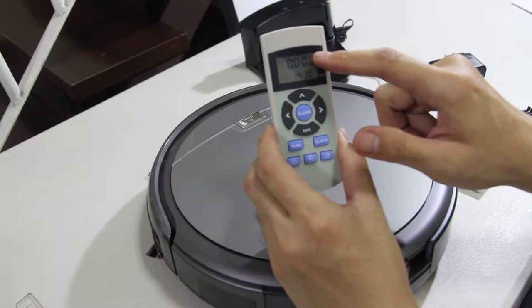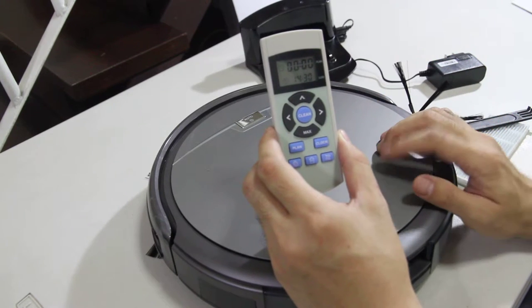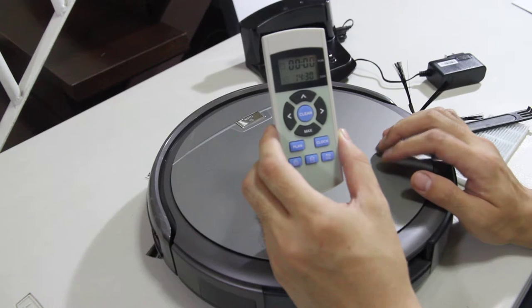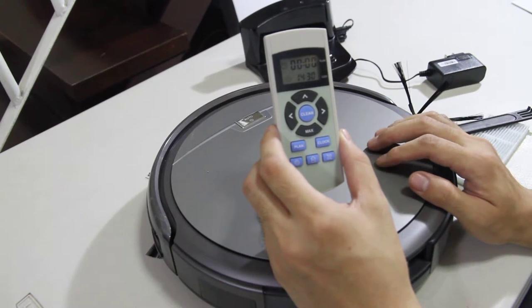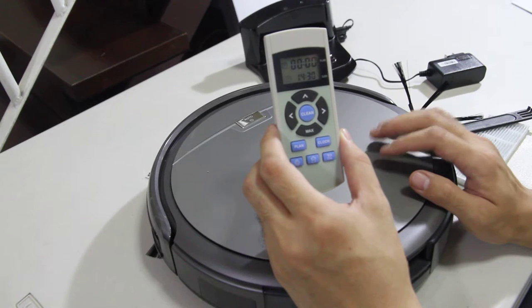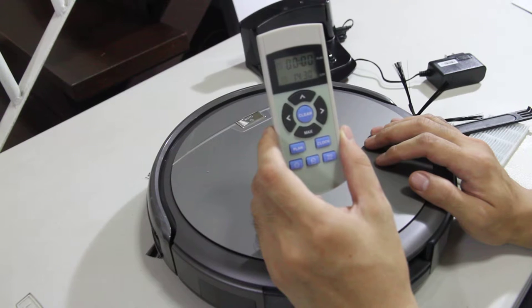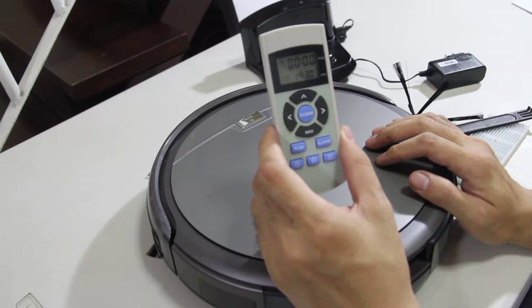And it has scheduling. You can schedule this robot to clean every day of the week, but at the same time every day. So you cannot schedule this to clean at different times each day. So if you schedule this to clean at 6 a.m.,